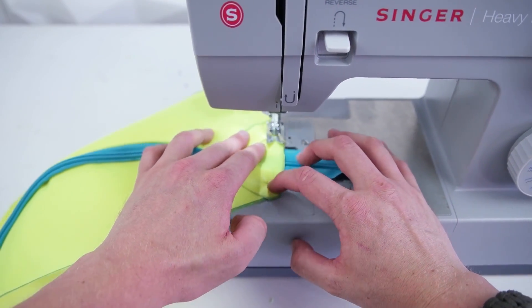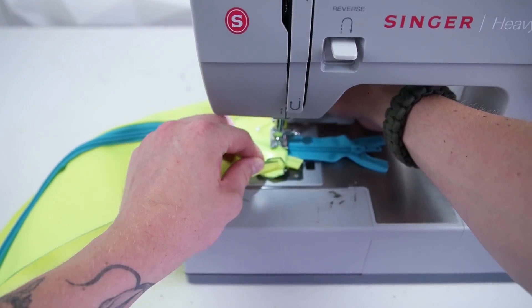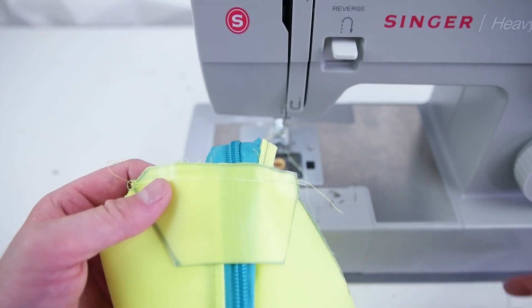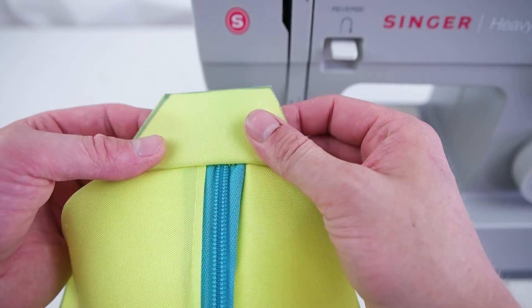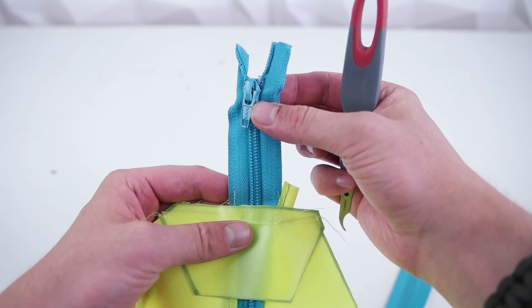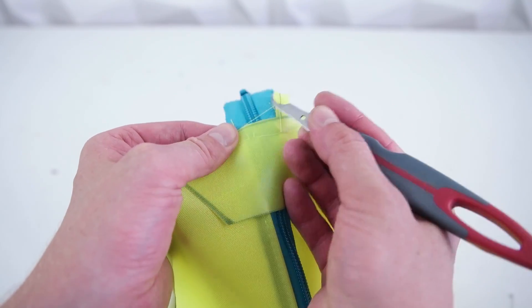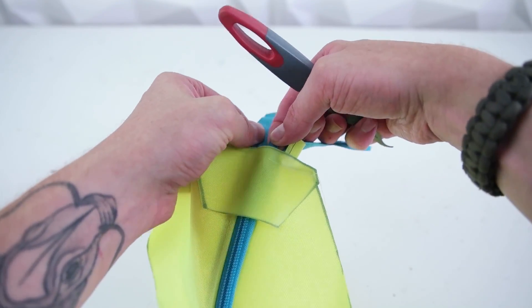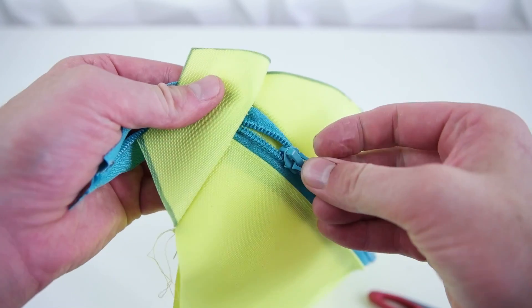You're going to want to stitch it on with quarter-inch seam allowance. So I forgot to pull the zipper back in before sewing—it's an easy fix. All you have to do is de-thread right where the zipper is, pull it through, and then stitch back over.